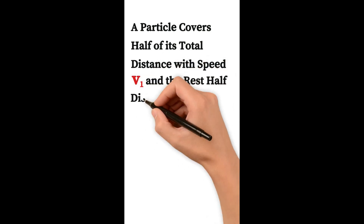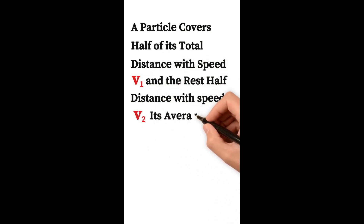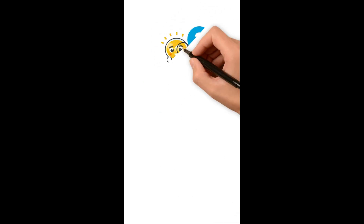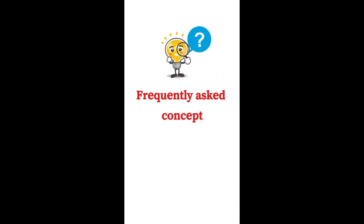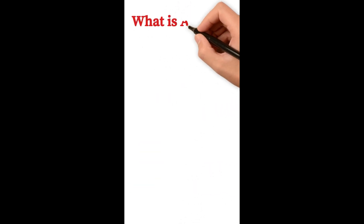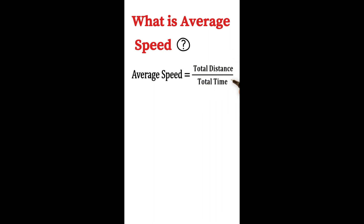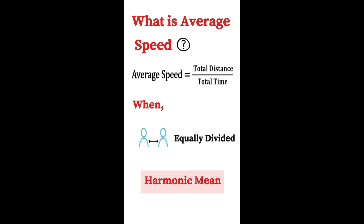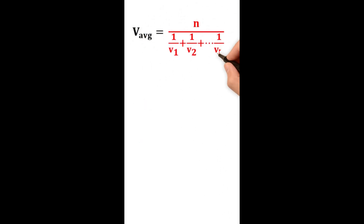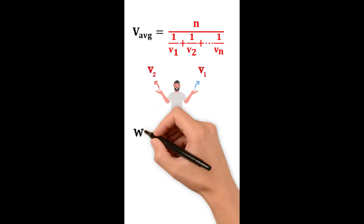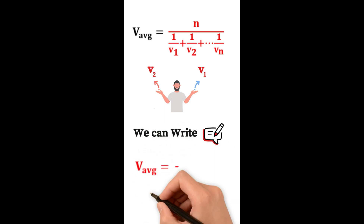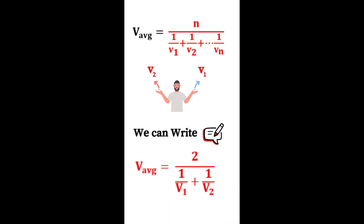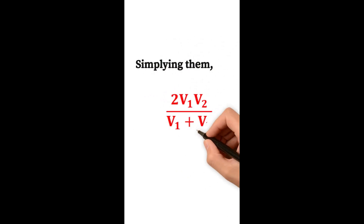A particle covers half its total distance with speed v1 and the rest with speed v2. What is the average speed for the complete journey? Using the distance division shortcut with harmonic mean — since distance is equally divided — v_average = 2 / (1/v1 + 1/v2), which simplifies to v_average = 2·v1·v2 / (v1 + v2).